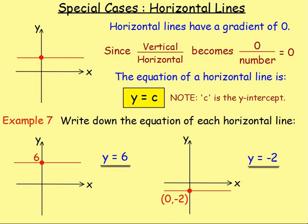Horizontal lines: if you have a perfectly flat line, the gradient is zero. The equation of a horizontal line is just y equals whatever number it goes through on the y-axis. So the equation of a line crossing at 6 would be y equals 6, and crossing at negative 2 would be y equals negative 2. Since m is zero, you have 0x which you don't need to write, so the equation is simply y equals c.